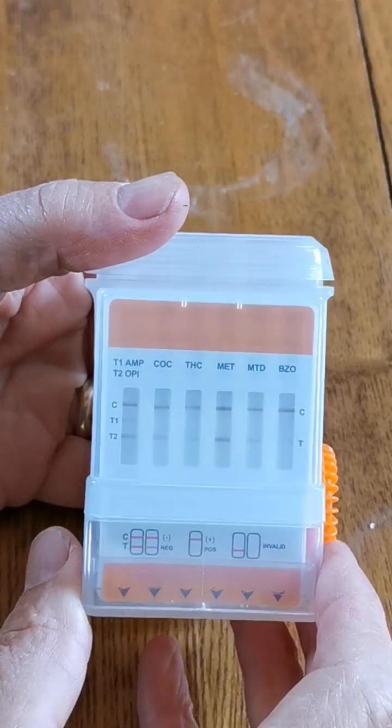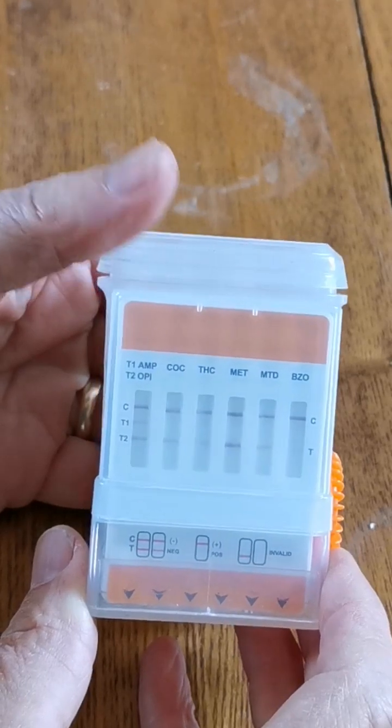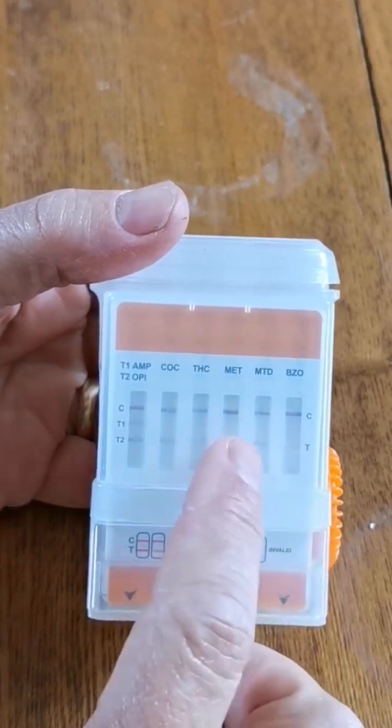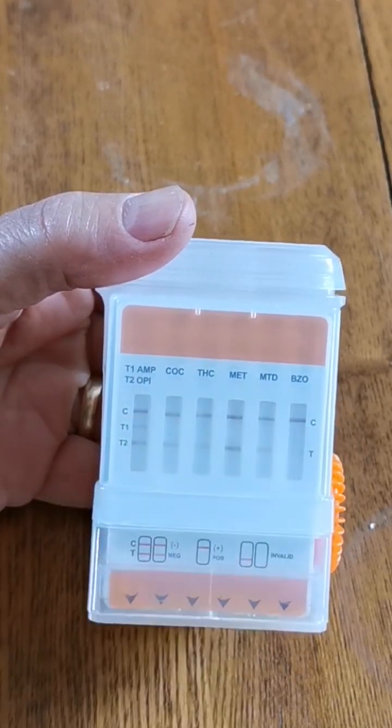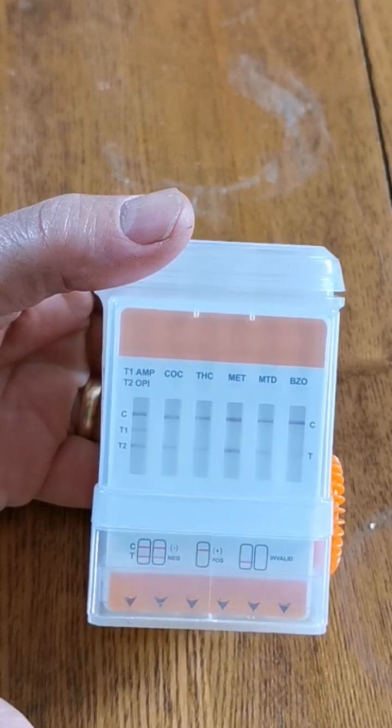We're looking for the presence of test lines and control lines. Every single one of these columns must have a clear control line, which is the line marked by the C and furthest away from the dipped end.